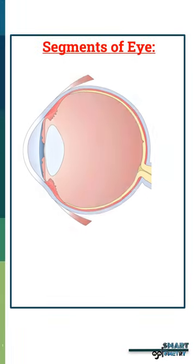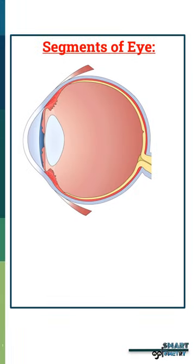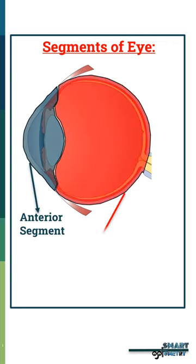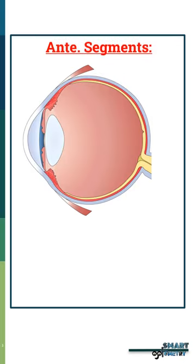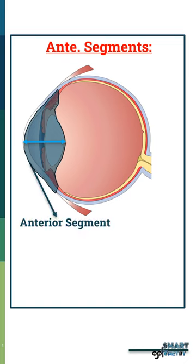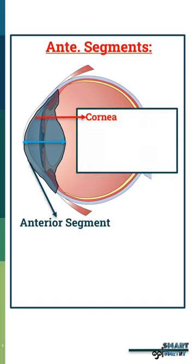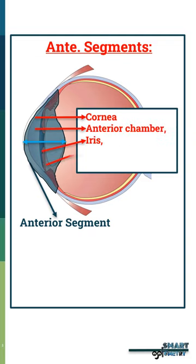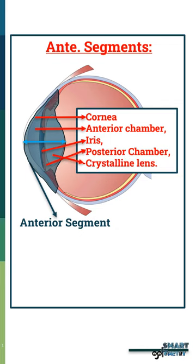The eyeball can be divided into two segments: the anterior segment and the posterior segment. The anterior segment extends from the cornea to the posterior lens. The anterior segment includes the cornea, anterior chamber, iris, posterior chamber, and crystalline lens.